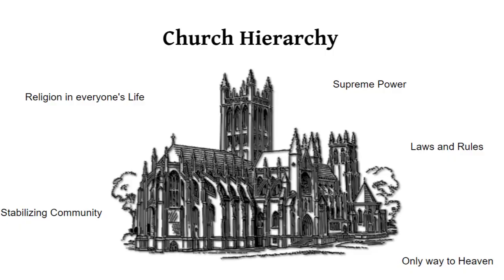I'm Sadia, and I will talk about the hierarchical role of the church. In medieval ages, the church was dominant in everyone's life. People believed that God, hell, and heaven existed, and they considered the church as the only way to heaven. The Roman Catholic Church was the supreme power during the Middle Ages. It worked as a stabilizing force to keep the community together. The laws and rules of the land, public policies, and governance of the people were all affected by religion during the Middle Ages.